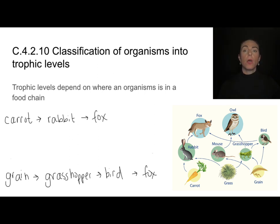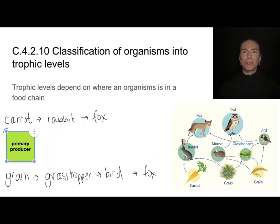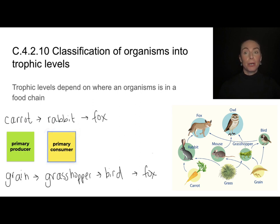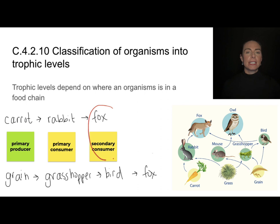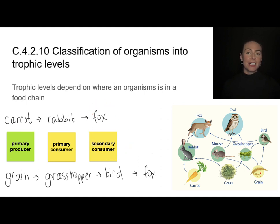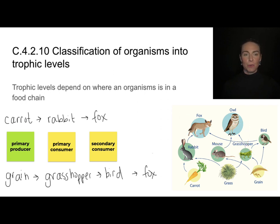Food chains always start off with a primary producer. Primary producers are eaten by primary consumers, and primary consumers are eaten by secondary consumers. In this example from the food web, the fox is a secondary consumer. However, if I consider a different feeding interaction in this food web, the fox is not a secondary consumer.